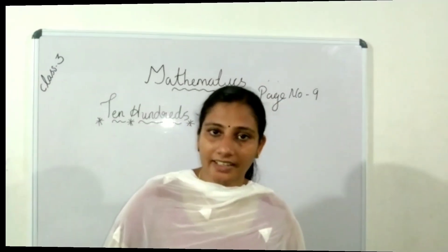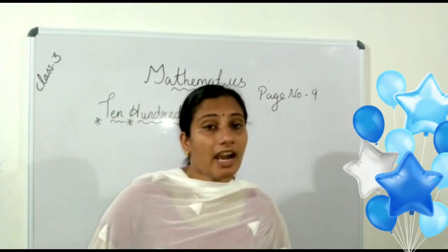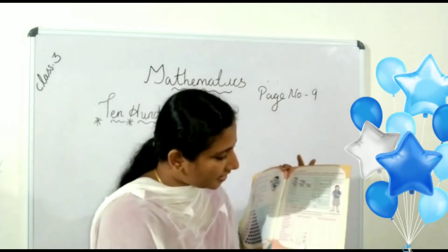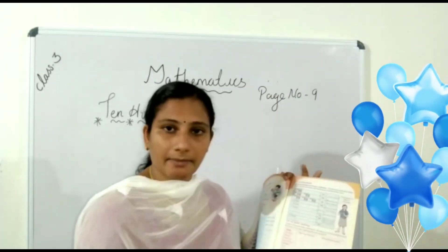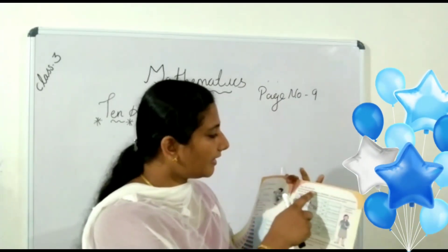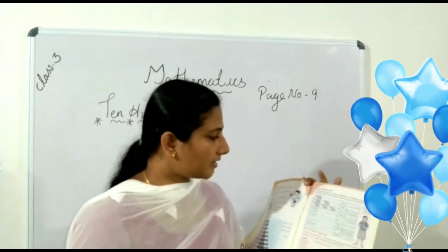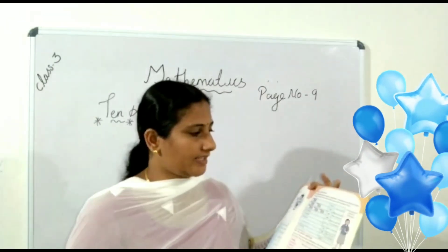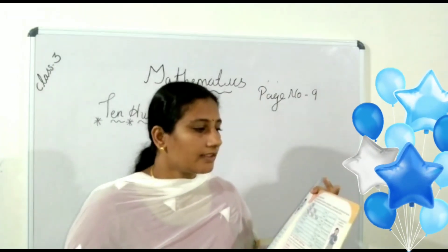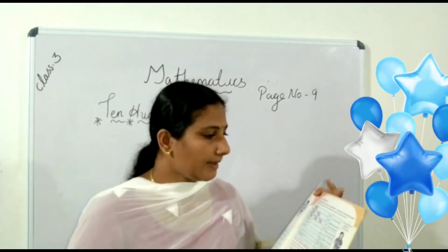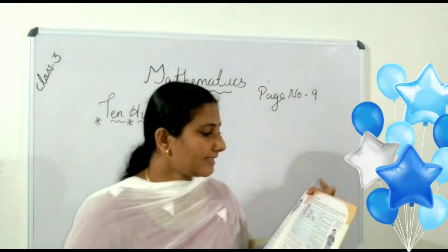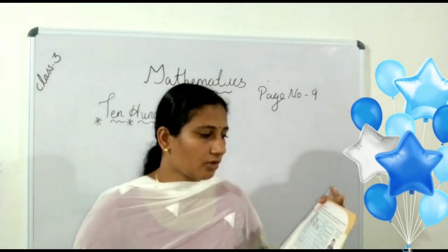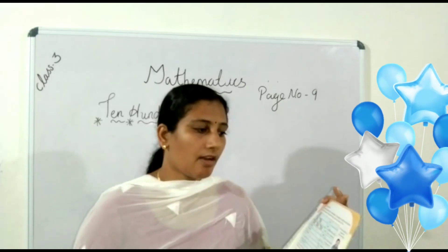Hi dear children, today in our Maths class, let us discuss our textbook page number 9. Here, 10 hundreds. For the 100th anniversary celebration, 10 students contributed rupees 100 each. The table below shows the money given by them.